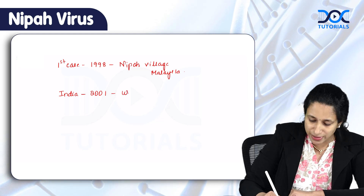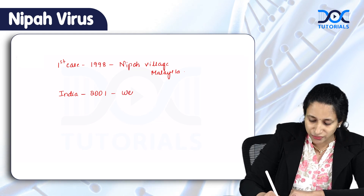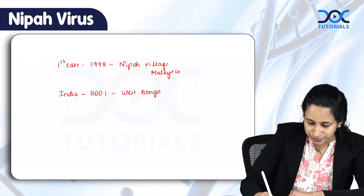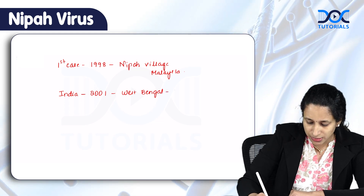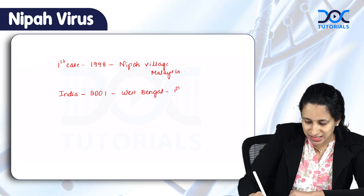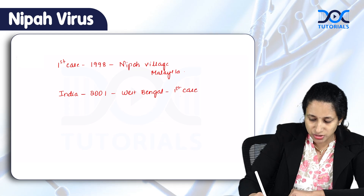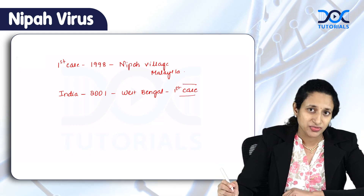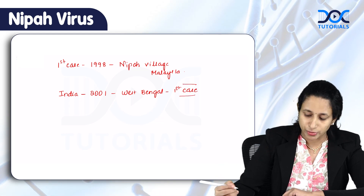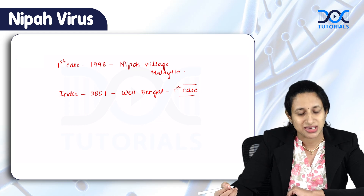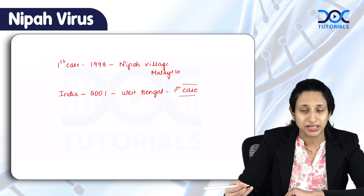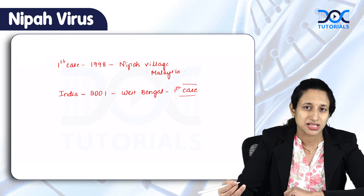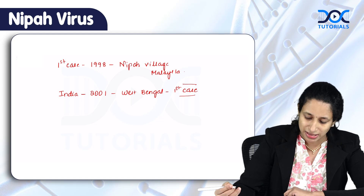Siliguri in West Bengal is where the first case in India was detected. We have been having outbreaks every now and then, many of which have happened in India, in Bangladesh, and in certain countries like Malaysia as well.